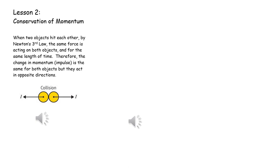When two bodies collide and are travelling in a straight line, the impulse that the bodies receive is exactly the same in magnitude, but in the opposite directions, as shown on the diagram.